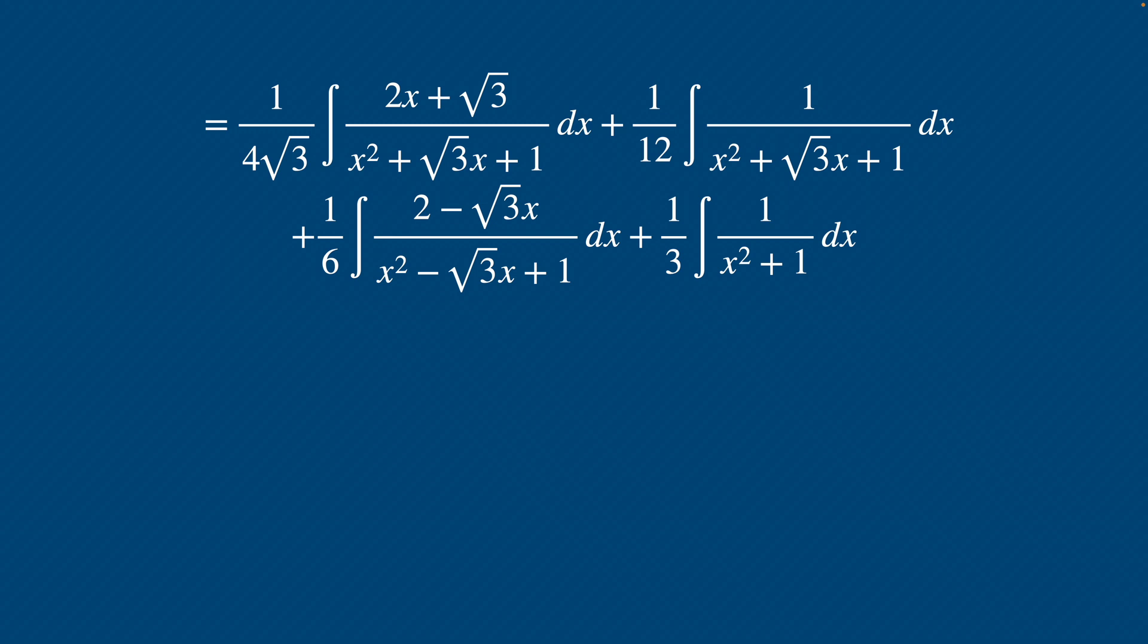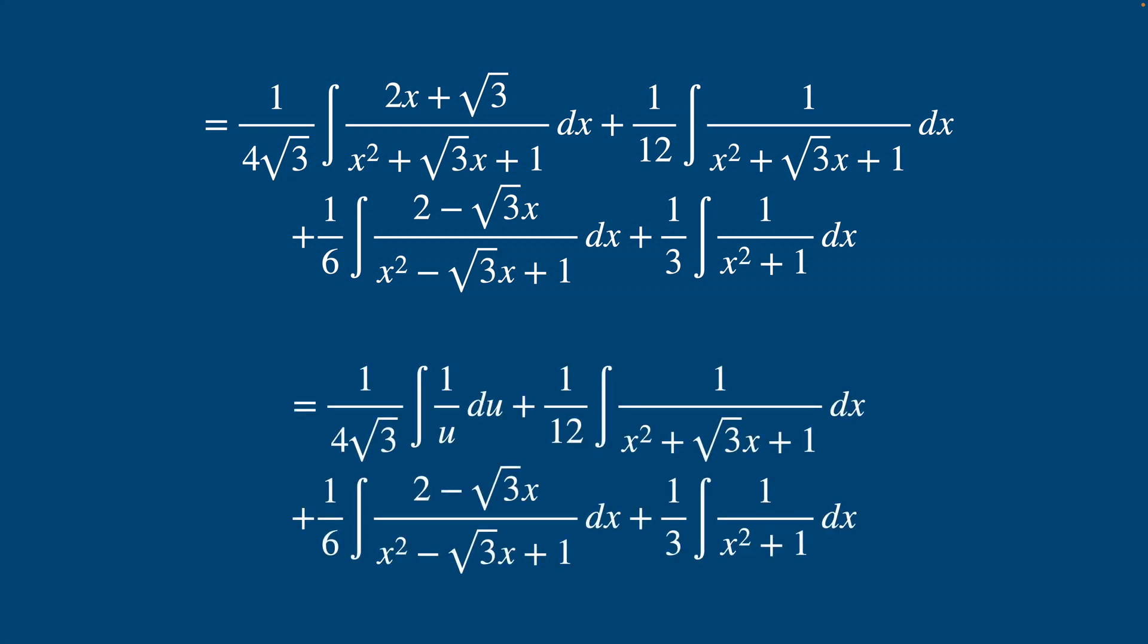For our leftmost integrand, substitute in u for our denominator, so x squared plus root 3x plus 1, and du is going to be 2x plus root 3 dx to get this here. And so now that's easy, right? It's just ln of the absolute value of u.